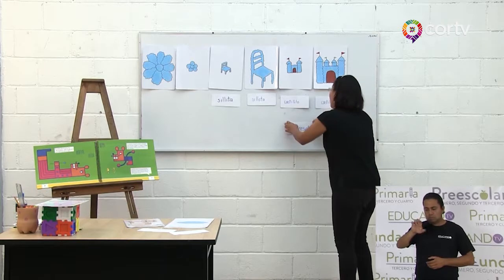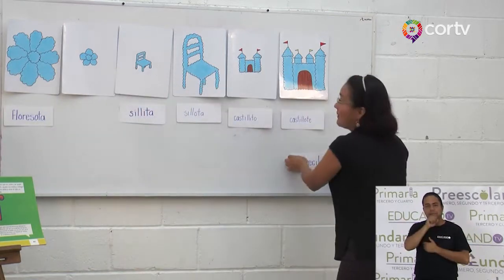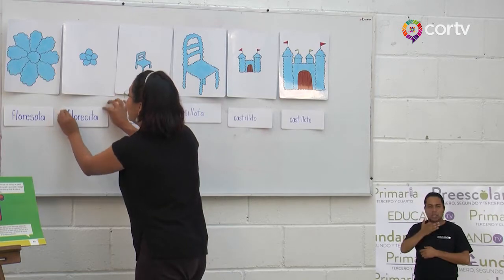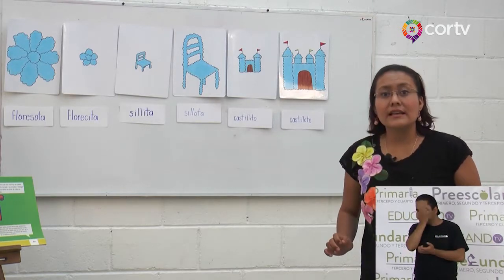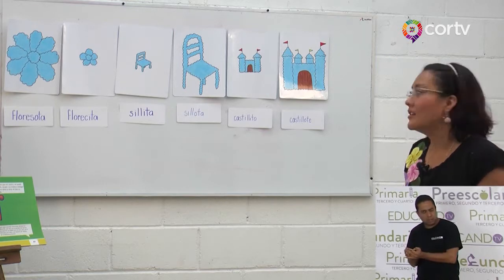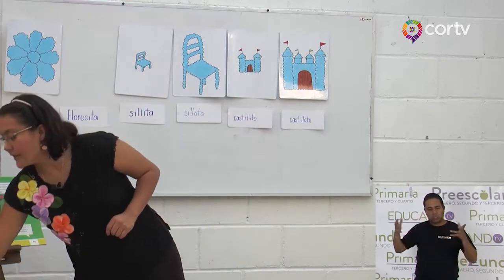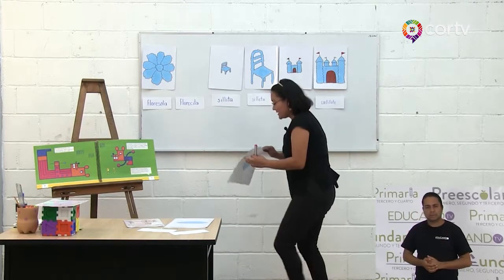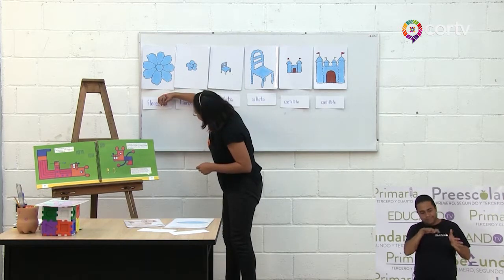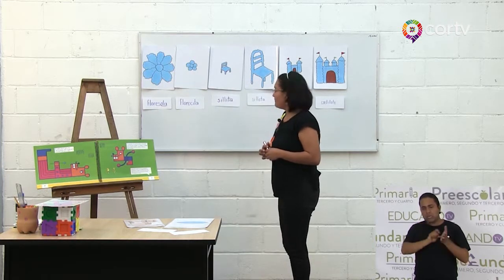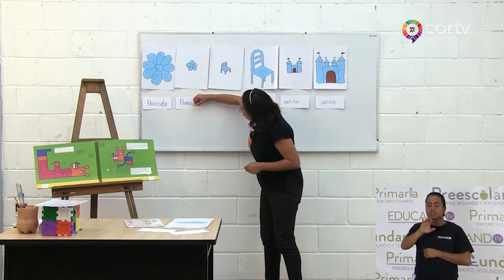Floresota. Muy bien. Floresota es de la flor más grande. Y tenemos la palabra florecita, de la flor más pequeña. ¿Qué observas en estas palabras? ¿Hay algunas que terminan igual? Vamos a ver. Floresota, ¿cuál es la terminación de la palabra floresota? Excelente. La terminación es ota. Vamos a subrayar. Su terminación es ota. ¿Cuál es la terminación de la palabra florecita? Excelente. La terminación es ota.